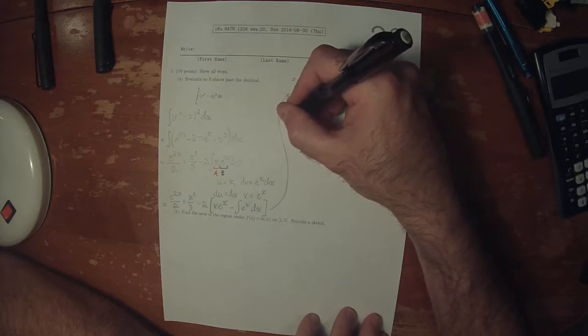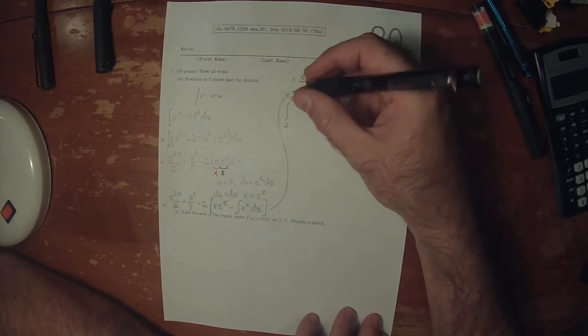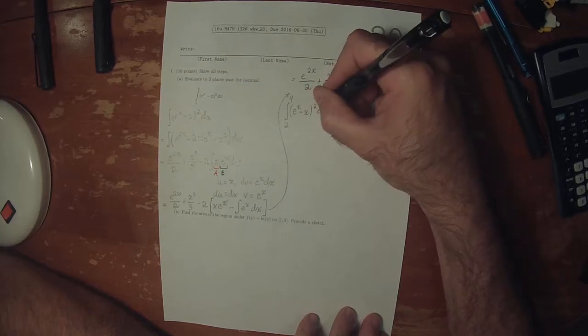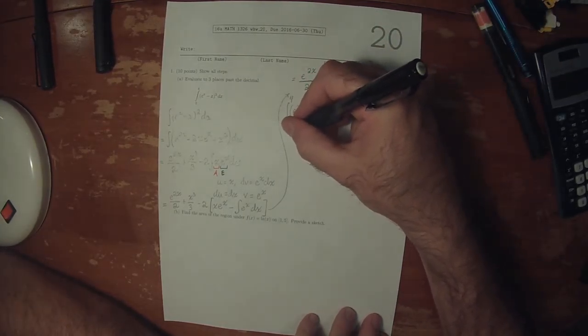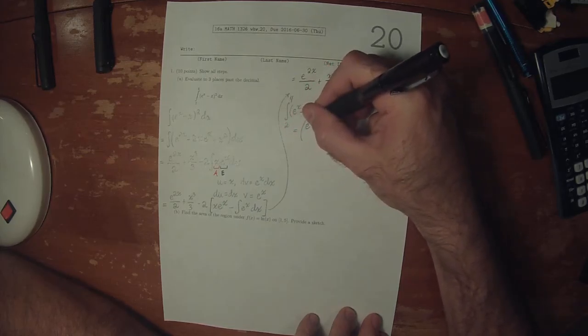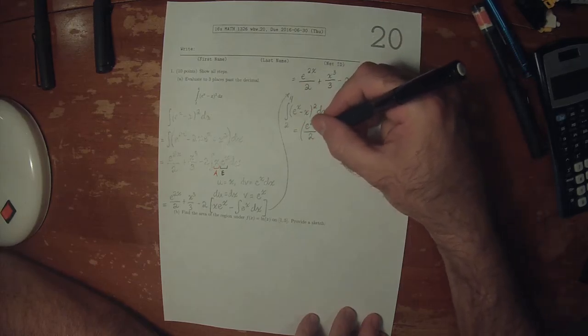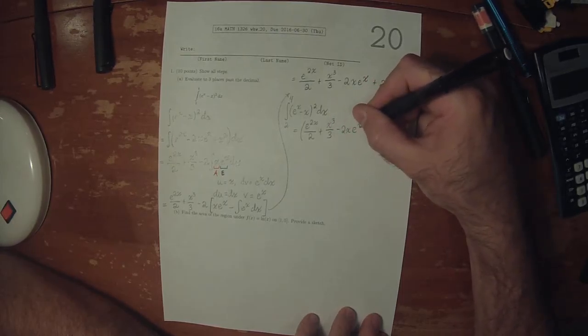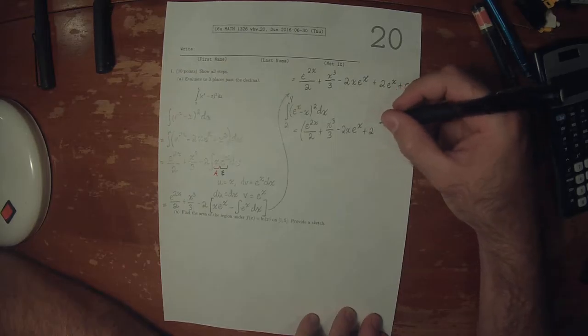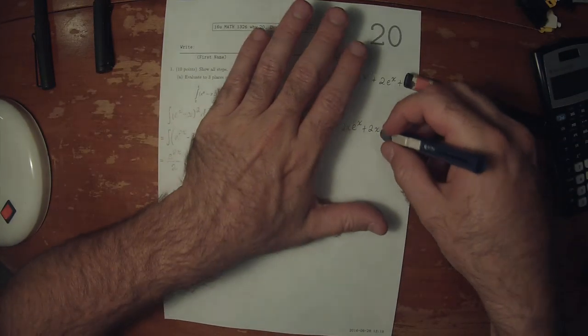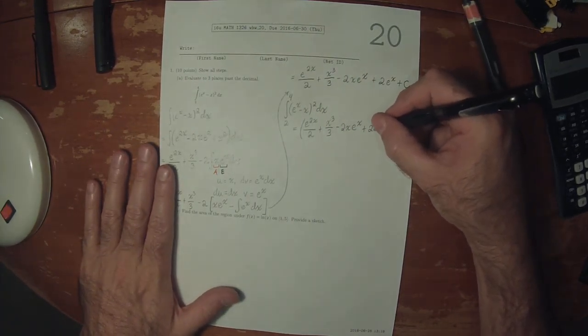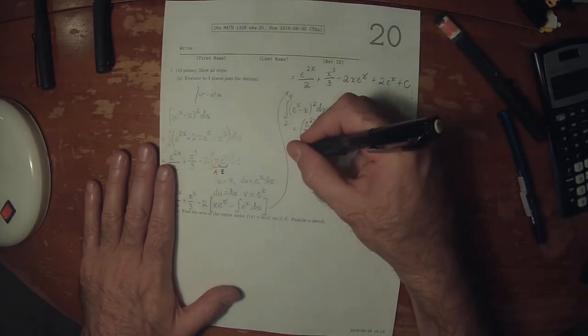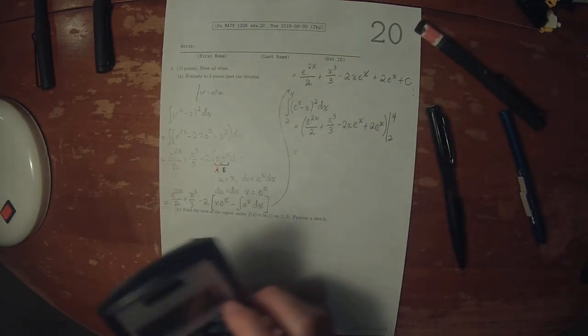So the integral 2 to 4 of e to x minus x squared dx is this expression: e to 2x over 2 plus x cubed over 3 minus 2 x e to x plus 2 e to x, evaluated from 2 to 4.